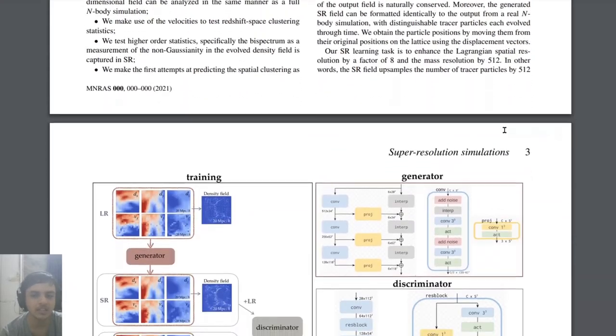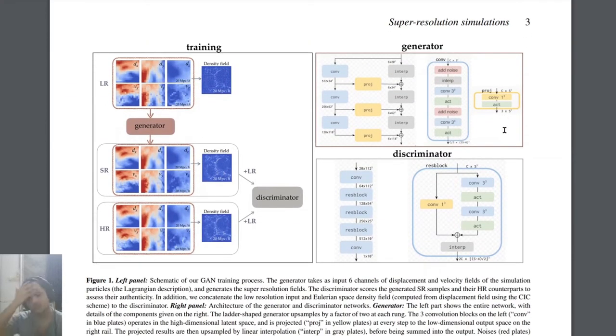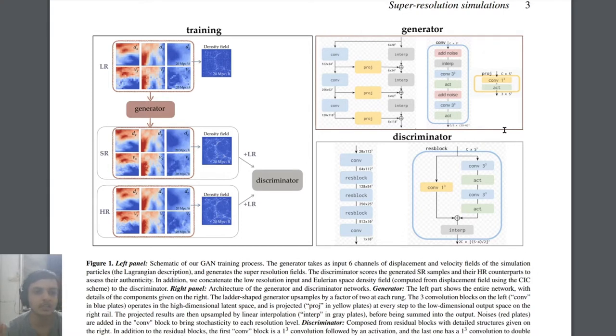This is the training model that they use. What they have here is low resolution, super resolution, and high resolution - three kinds of things - and all these datasets are fed to a GAN network.